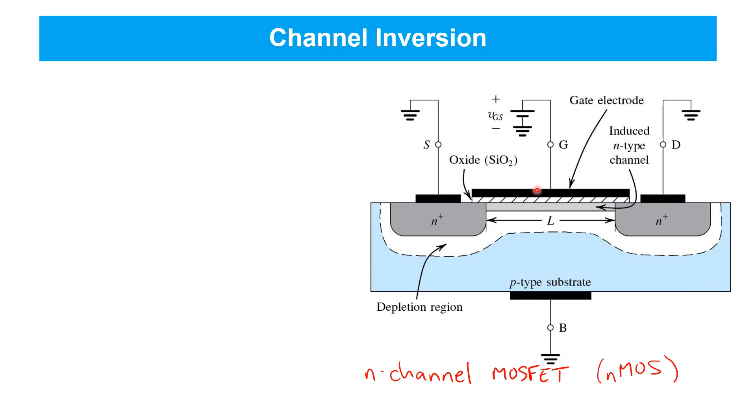Similarly, the gate is electrically insulated from the channel region by the oxide layer, so no current flows in or out of the gate either. Current can only flow between drain and source.